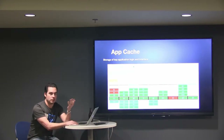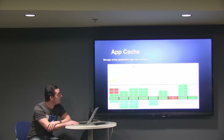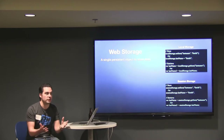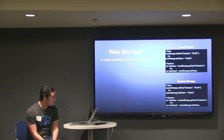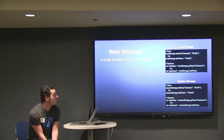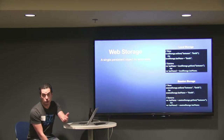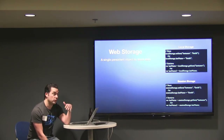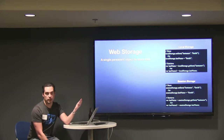App Cache is really storing just our interface. We still really need to be online for data unless we can store data offline. The first way to store data that's been around the longest is web storage — a single persistent global object in memory. There are two variables: local storage, which is persistent and stays there forever unless the user manually clears it, and session storage.